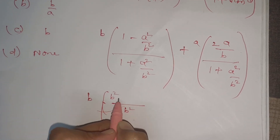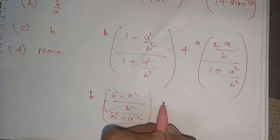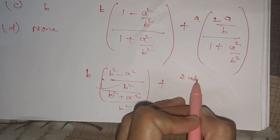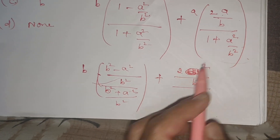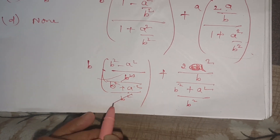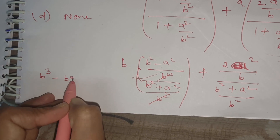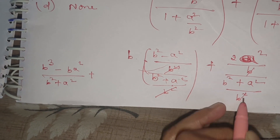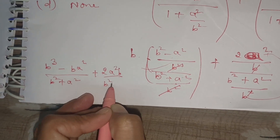Taking LCM as b², the first term becomes b·(b² - a²)/(b² + a²). The second term becomes 2a²b/(b² + a²). Combining: b·(b² - a²) + 2a²b, all upon (b² + a²). The b² terms cancel in the numerator.